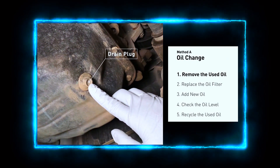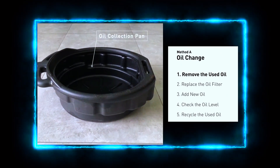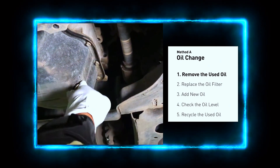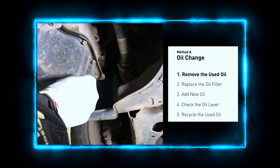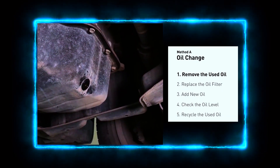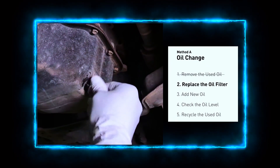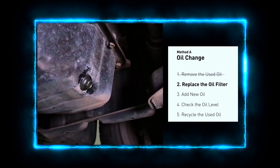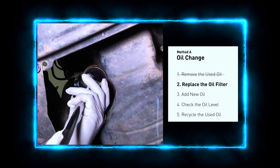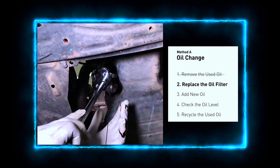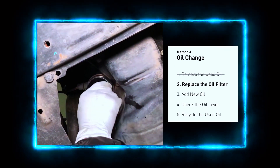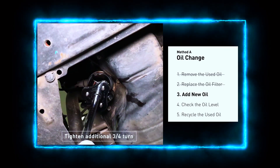Locate the oil drain plug — it's usually on the bottom of the engine. Use your socket set to loosen the plug, and place an oil drain pan underneath to catch the old oil. Carefully remove the drain plug and let the old oil drain completely. While the oil is draining, it's a good time to inspect the plug and washer for any signs of wear or damage. Now let's replace the oil filter — using your oil filter wrench, loosen and remove the old filter. Before installing the new one, lubricate the rubber gasket with a bit of fresh oil, then screw on the new filter hand-tight.